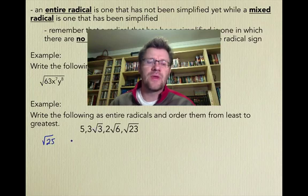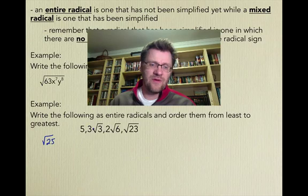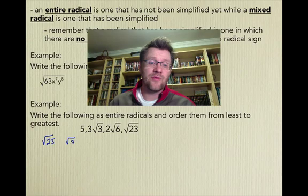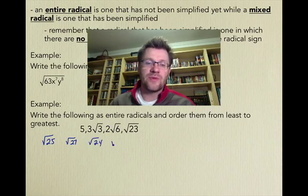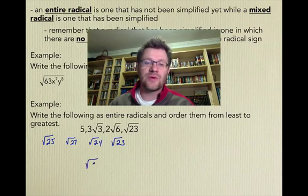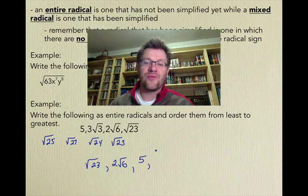If we're going to write 5 as a square root, that's just going to be √25. When we have 3√3, we can rewrite that one as √27, because that's 3 squared, which is 9 times 3. This 2√6 is going to end up being √24. So if we're going to order them from least to greatest, we have √23, followed by √24, which was 2√6, followed by √25, which was 5, and then followed by 3√3.